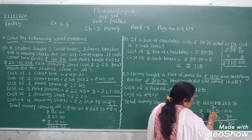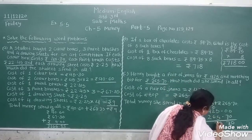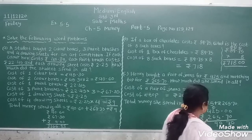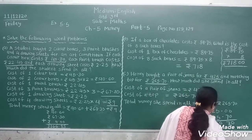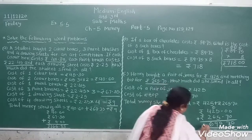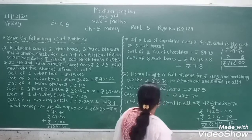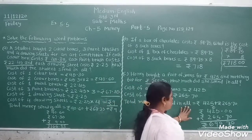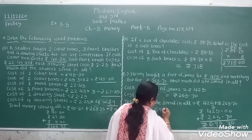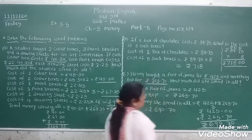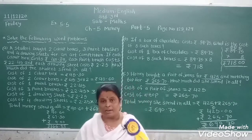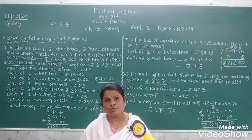Adding: paise column — 0 and 0 gives 0. Then 5 and 7 is 12, write 2 carry 1. Then 1 and 2 is 3, and 3 and 6 is 9. Then 4 and 2 is 6. So we write 6. Total money she spent in all: Rs. 690.70 paise. You understand this word problem; solve the other problems at home.